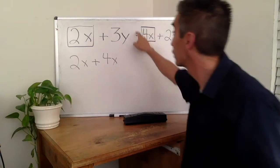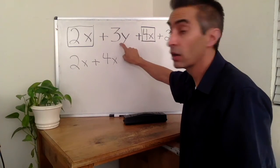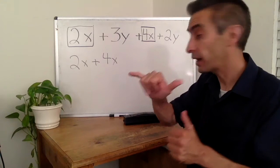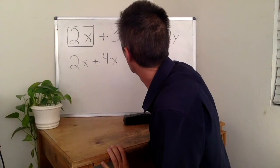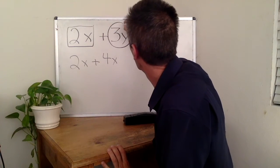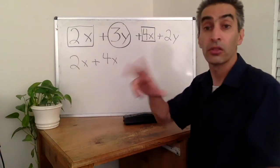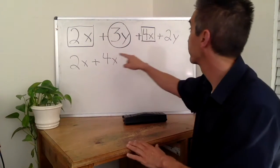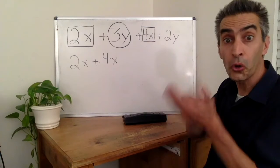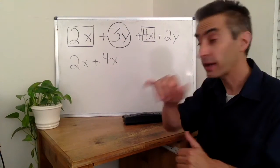Now, notice again. 3 is with the y. 3 is with the y, yes. And notice again, there's the 2 with the y.